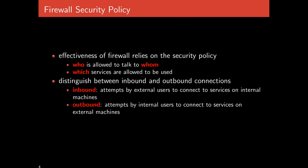The effectiveness of a firewall is based on its policy. The policy decides who is allowed to talk to whom and which services are allowed to be used — which ports can be used in communication. There is a fundamental distinction between inbound and outbound connections. An inbound connection is an attempt by external users — anyone on the internet — to connect to services on internal machines, such as accessing a web server inside the network.